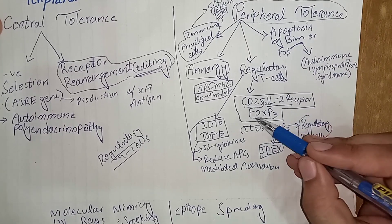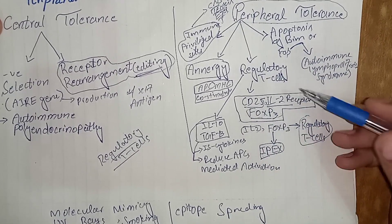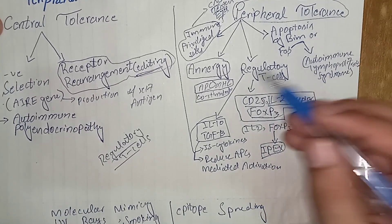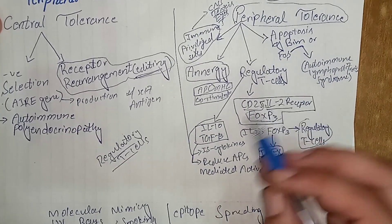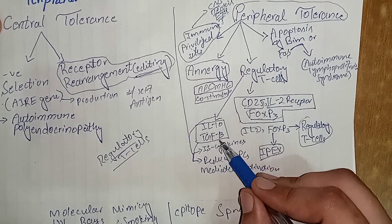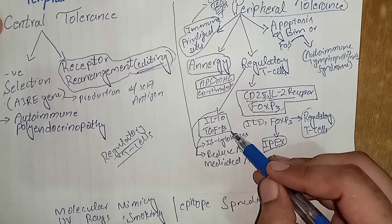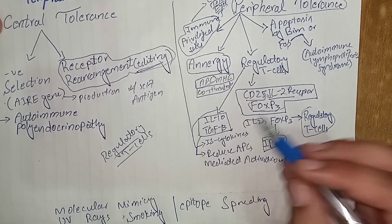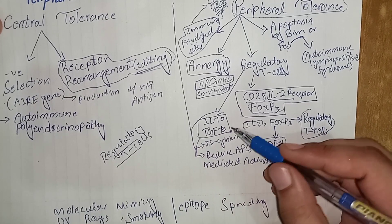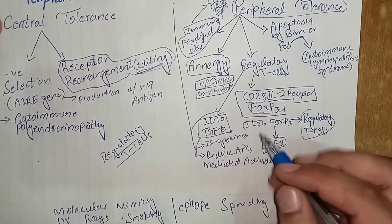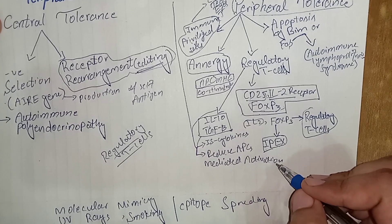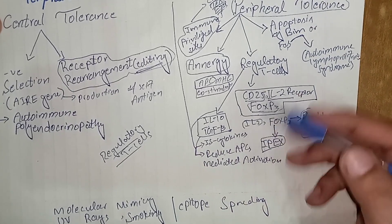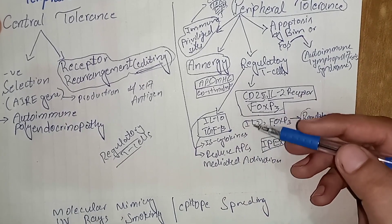There is a hypothesis that regulatory T cells release interleukin-10 and TGF-beta, which are immunosuppressive cytokines that suppress the activity of T lymphocytes. They also reduce the ability of antigen presenting cells to activate T lymphocytes, playing a role in preventing autoimmunity. However, their exact mechanism remains unclear.